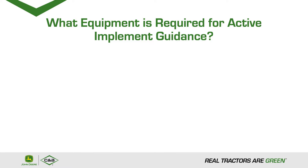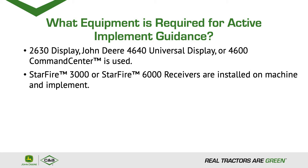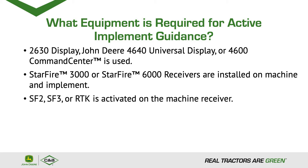What equipment is required for Active Implement Guidance? A 2630 display, a John Deere 4640 universal display, or a 4600 command center. For the receiver, we can use either a Starfire 3000 or a Starfire 6000, with one installed on the machine and one on the implement. For activations on the machine receiver we need SF2, SF3, or RTK.